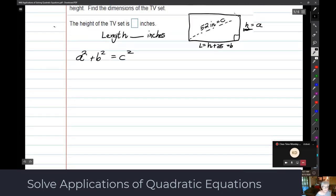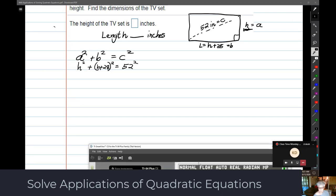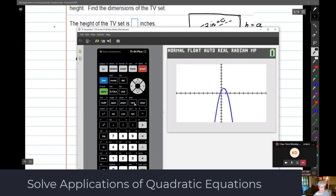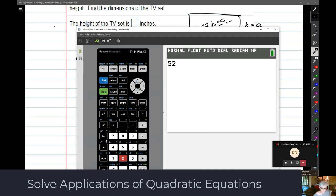So here we go. A is going to be H, so I'll have H squared plus the length, which is H plus 28 squared, equals c squared, which is 52 squared. We're definitely going to need a calculator here. 52 squared is 2704.